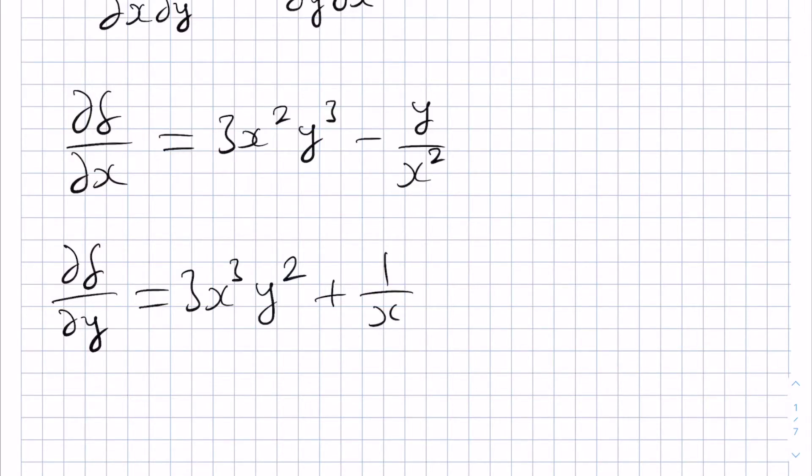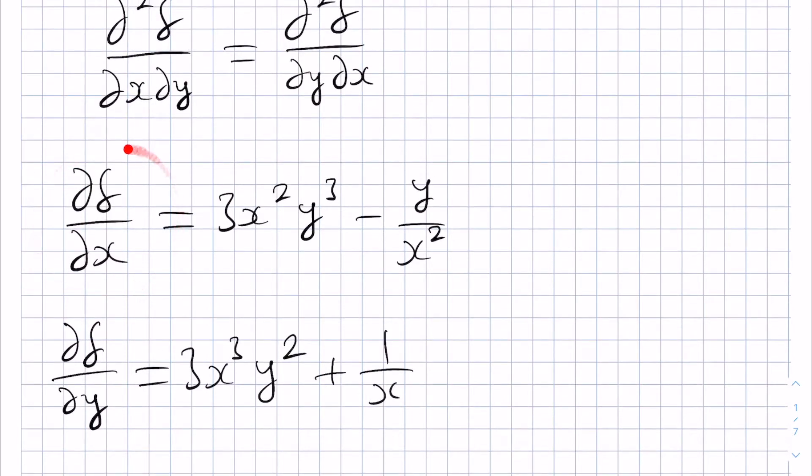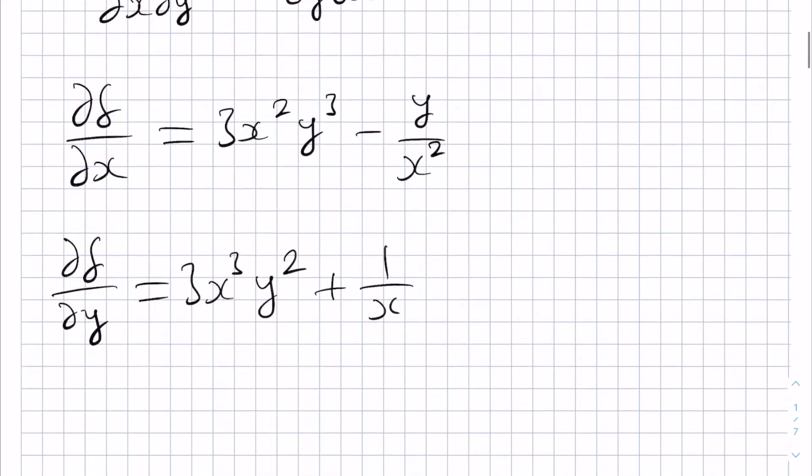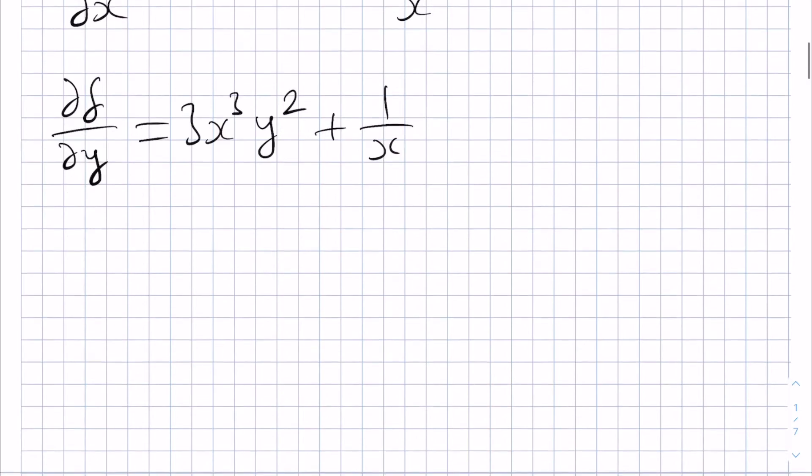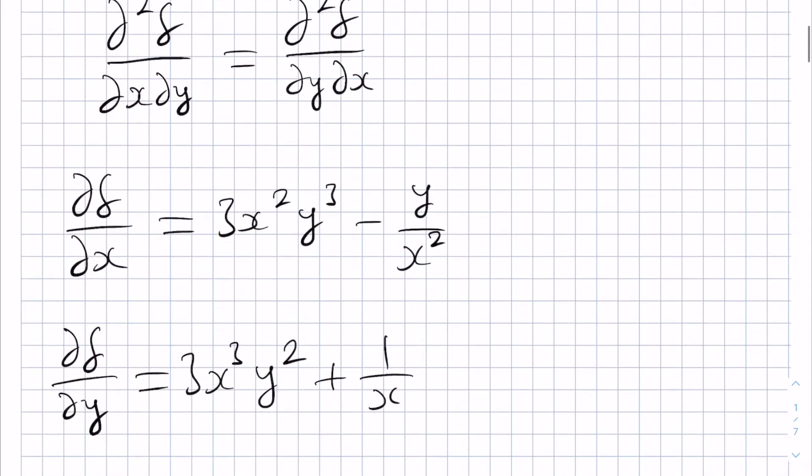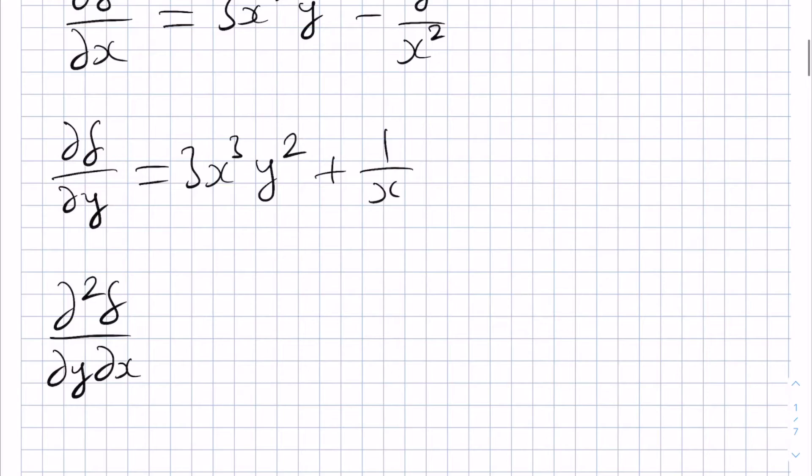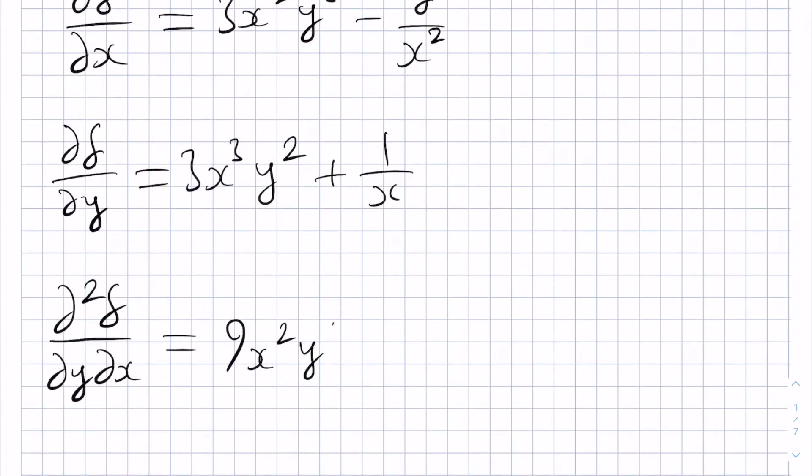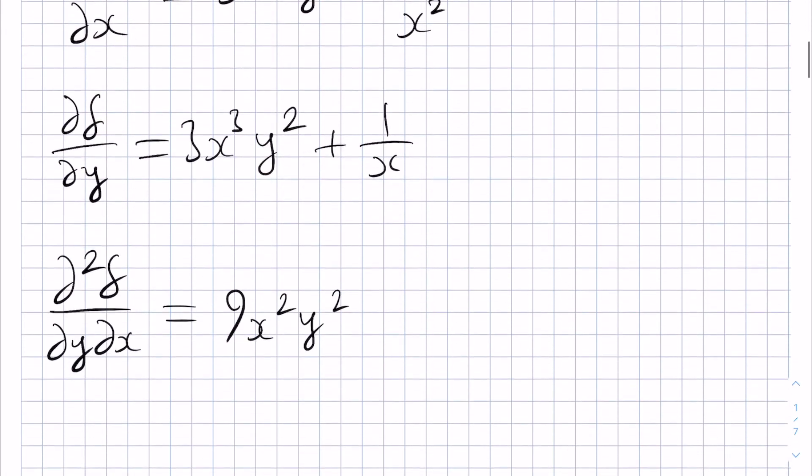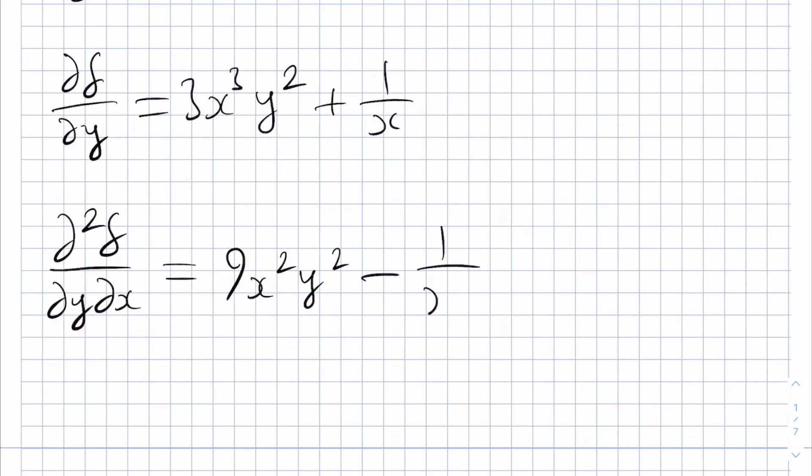Next, we differentiate these functions again, differentiating the first with respect to y and the second with respect to x. So d squared f by dy dx we get from taking this and differentiating with respect to y. So we get 9x squared y squared minus 1 over x squared.